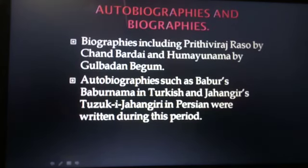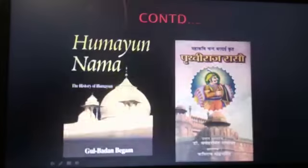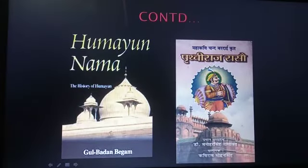Autobiographies and Biographies: Biographies including Prithviraj Raso by Chand Bardai and Humayunama by Gulbadan Begum, and autobiographies such as Babur's Baburnama in Turkish and Jahangir's Tuzuk-i-Jahangiri in Persian were written during this period, giving us lots of information about the medieval period.